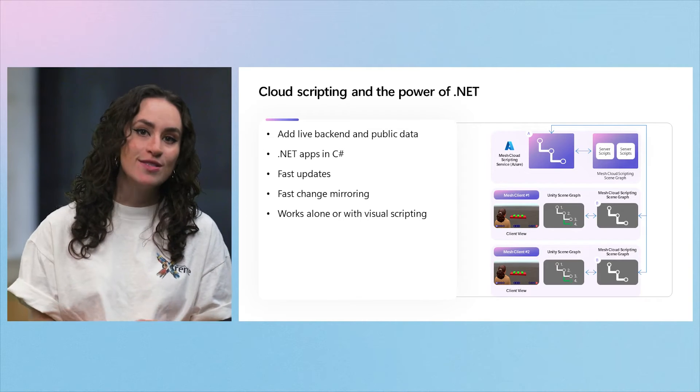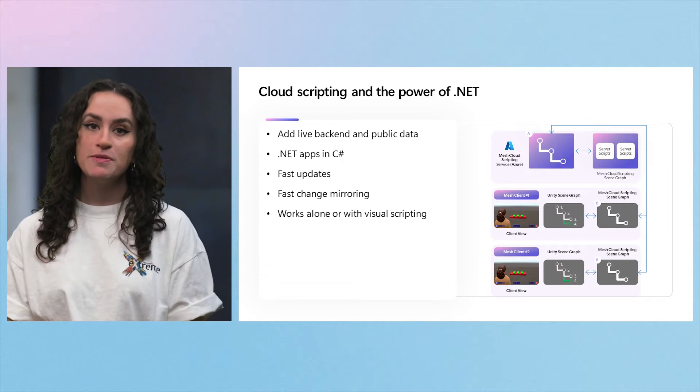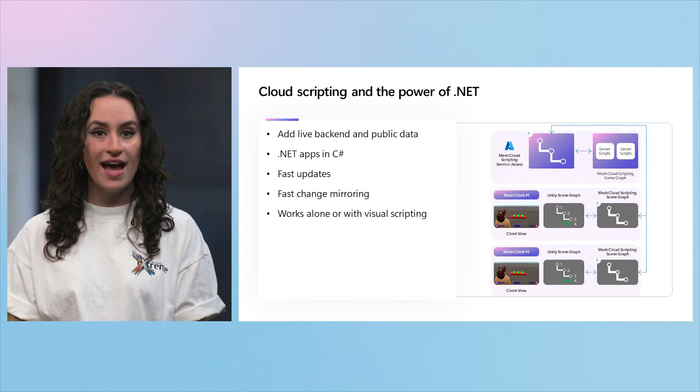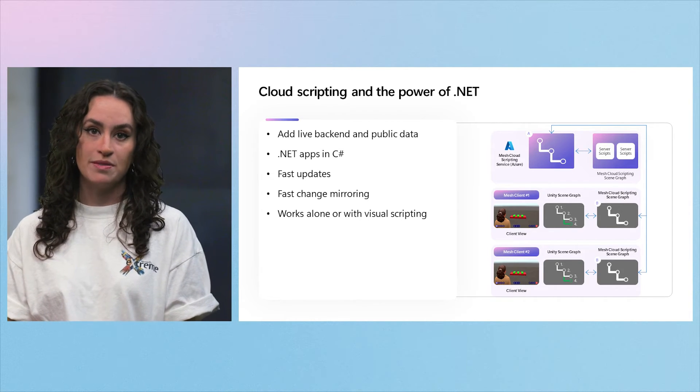Visual Scripting and Cloud Scripting are better together and can coexist in the same scene, and we are actively investing in integration between them. With Cloud Scripting, you can pull live data from internal or public sources into your Mesh scene. The scripts you write in C Sharp are .NET apps and can call any .NET Core API, access NuGet libraries, and leverage best-in-class tools to power your experiences.